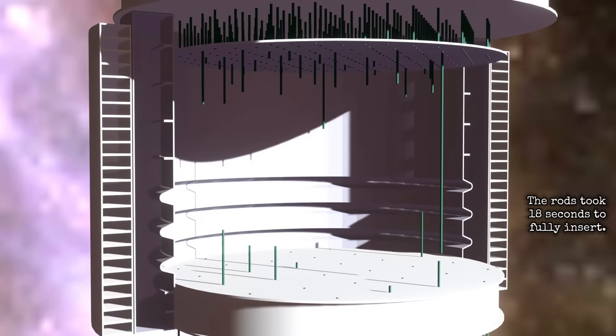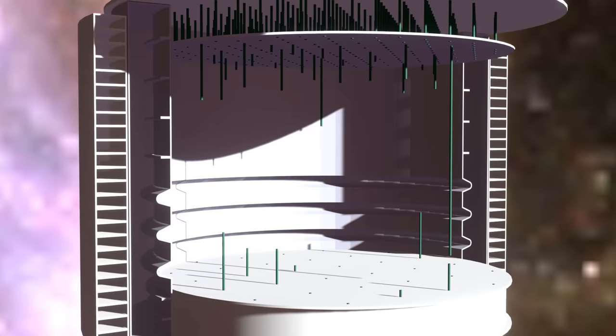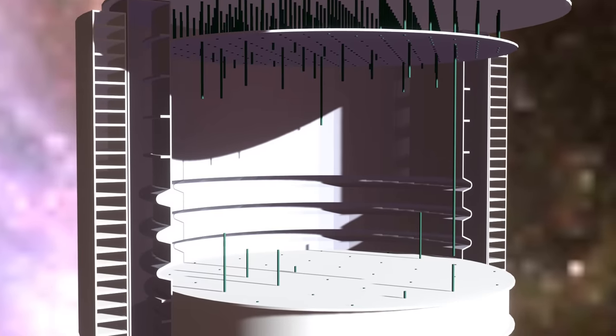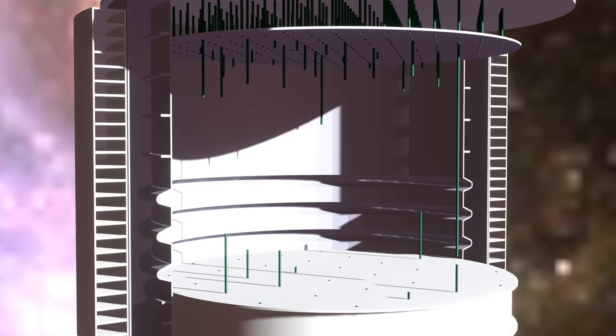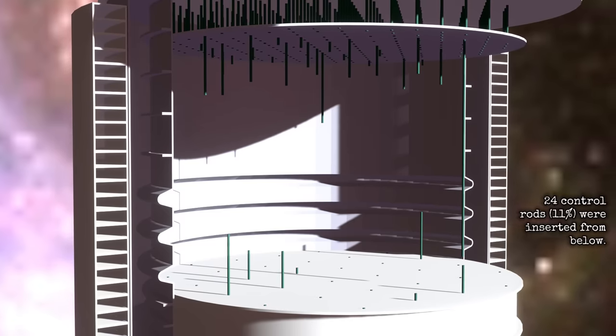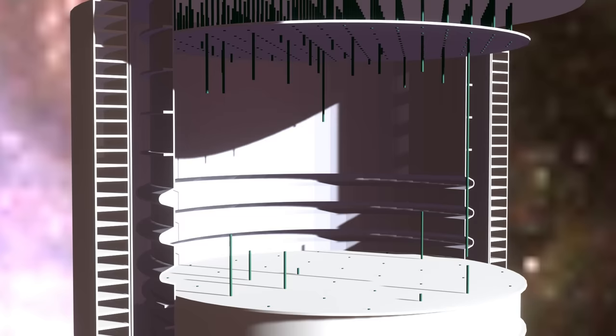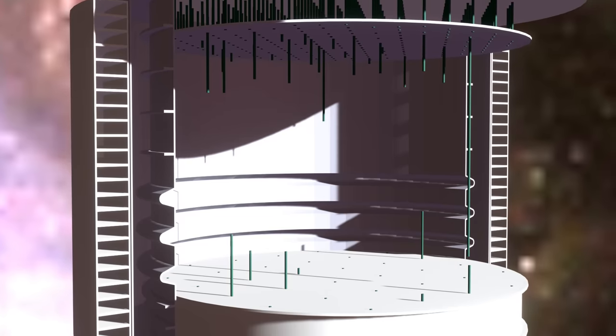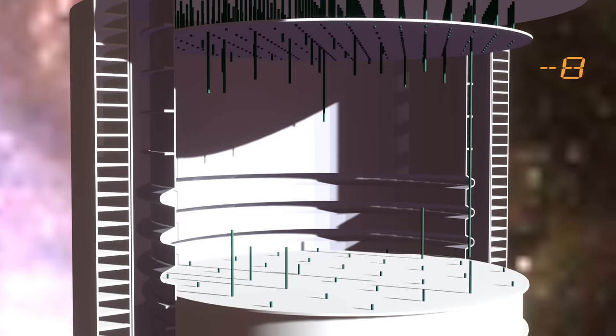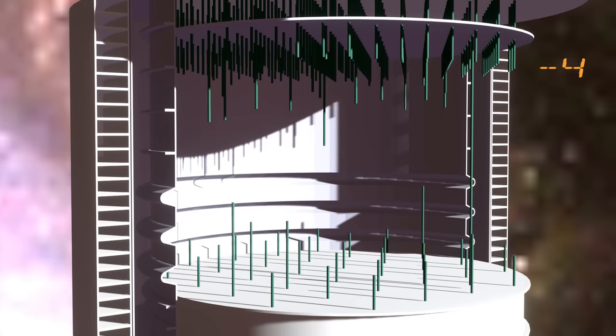The control rods were in this configuration when the AZ-5 was pushed. It is frightening that there was just one rod fully inserted. At no time should the core have had less than the equivalent of 26 rods active, but on this evening, it had almost none because of the misguided attempt to counterbalance the xenon poison. The reactor had been pushed too far.